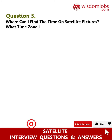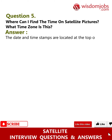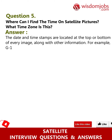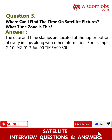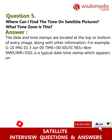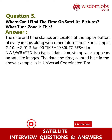Question 5: Where can I find the time on satellite pictures — what time zone is this? Answer: The date and time stamps are located at the top or bottom of every image along with other information. For example, 'G10 IMG 01, 3rd of June 2000, Time = 00:30 UT, Series = 4km, NWSWR = SSD' is a typical date timestamp which appears on satellite images.